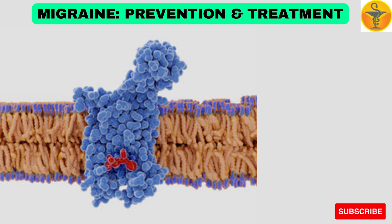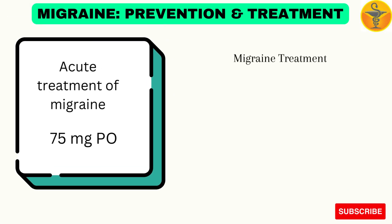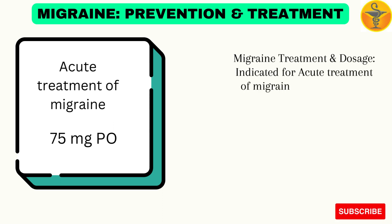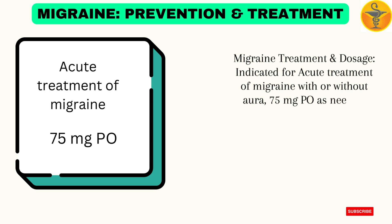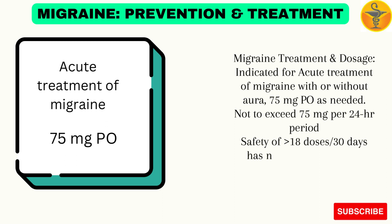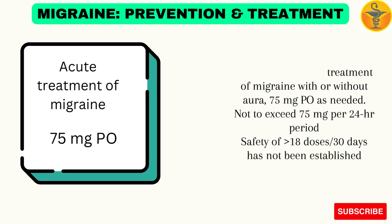Migraine Treatment and Dosage: Indicated for acute treatment of migraine with or without aura. 75 mg per oral is needed, not to exceed 75 mg per 24-hour period. Safety of greater than 18 doses in 30 days has not been established.